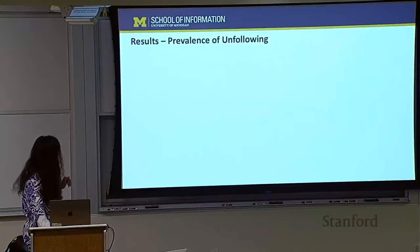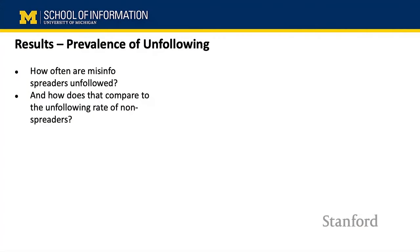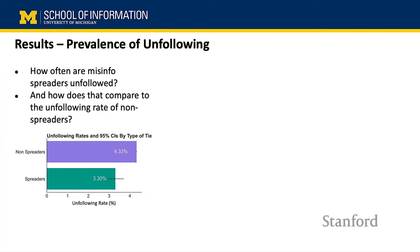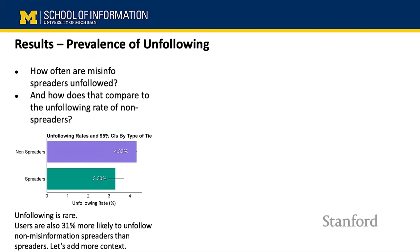Results: how often are misinformation spreaders unfollowed? The unfollowing rate is quite low — only roughly 3% of edges disappeared from March to October. Unfortunately, those edges are stickier than connections to non-spreaders. Users are 31% more likely to unfollow non-misinformation spreaders than spreaders. That's an unfortunate finding.